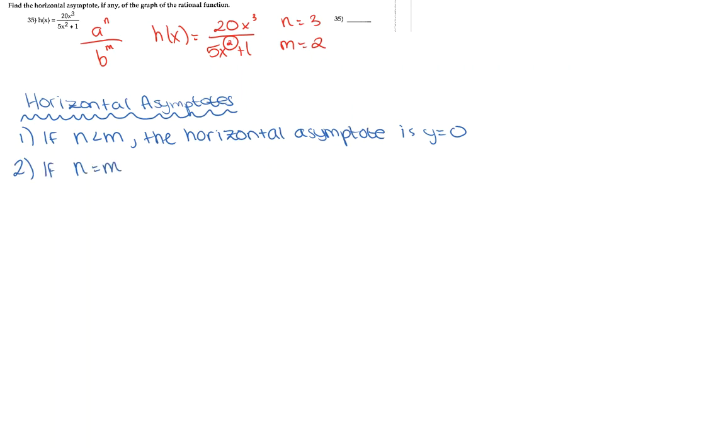For case 2, if n exponent is equal to the m exponent, the horizontal asymptote will be the result of a sub n over b sub m, or your leading coefficient of your x variables with the highest exponent on that numerator or denominator.